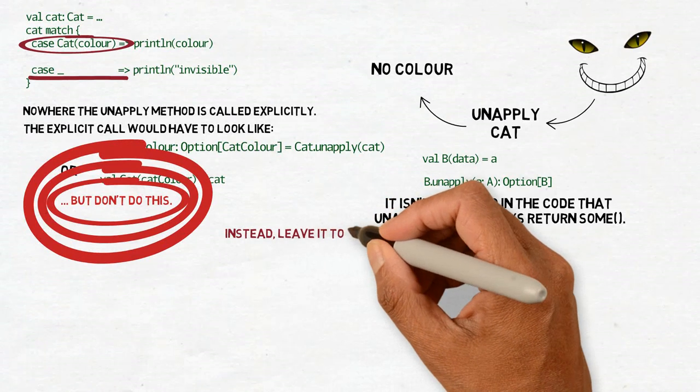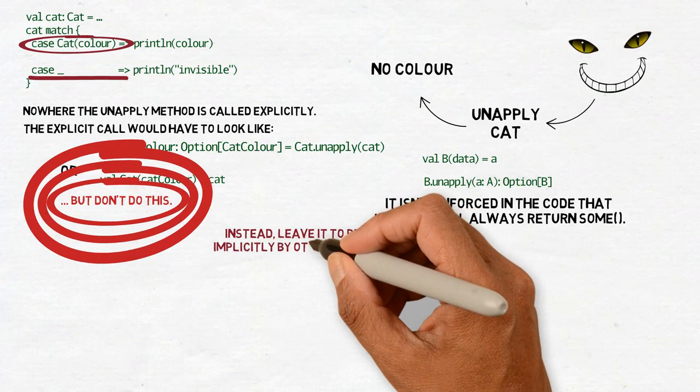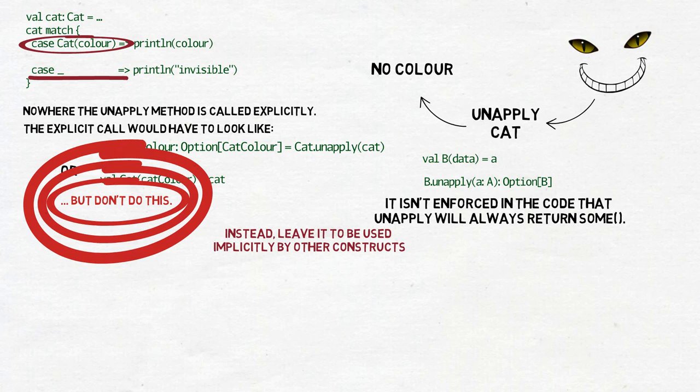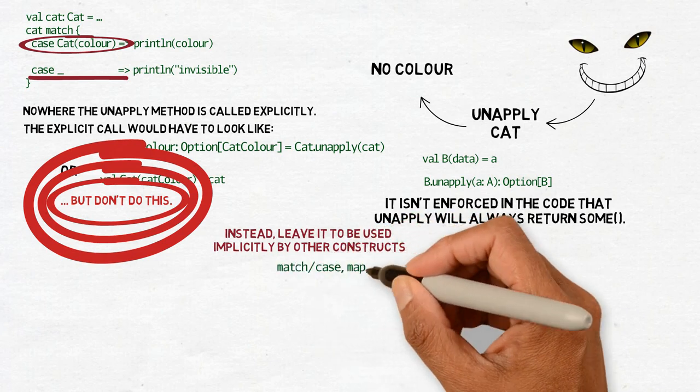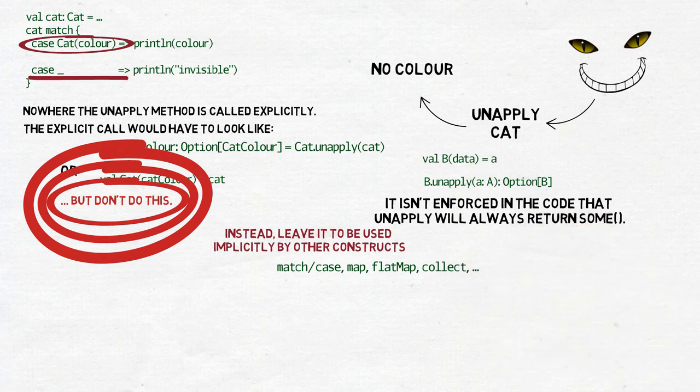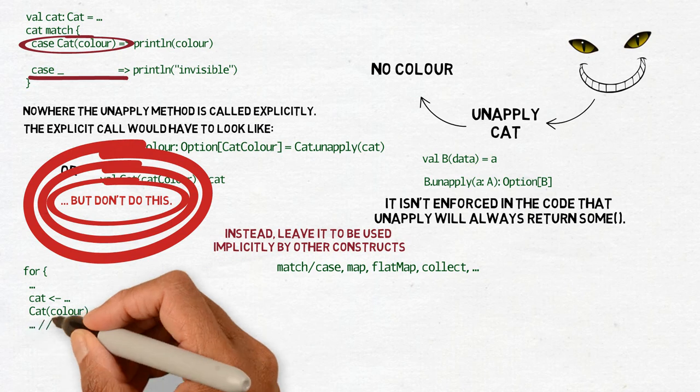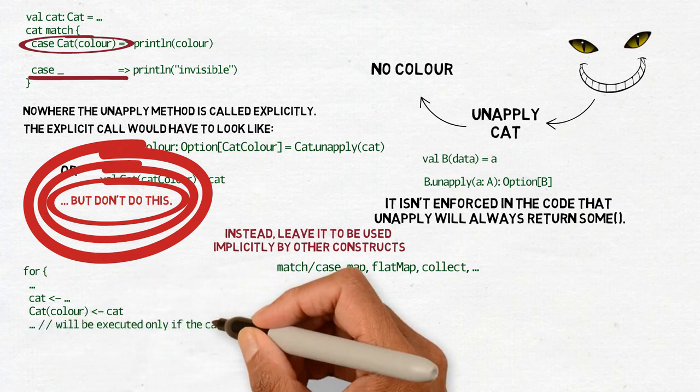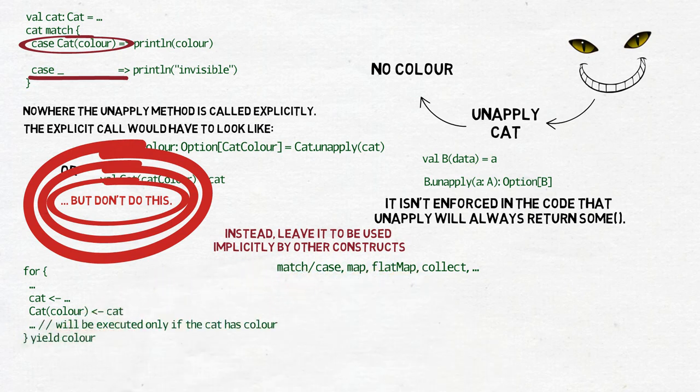Much more often unapply is left to be used implicitly by other constructs. You can see it everywhere in Scala. In match case, in map, flatmap, collect, and so on. You can also see it in for-yield, where it is used to declare that the execution will continue only if we successfully unwrap data at this point. It's one of those things which is everywhere, but you don't see it until you learn to spot it.